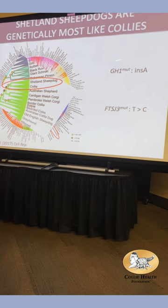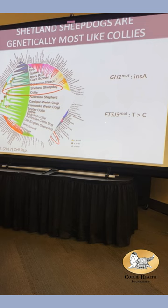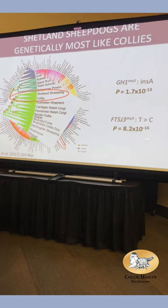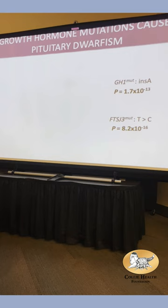One variant was an insertion and one was a base change. One is in a gene called growth hormone 1 — that's interesting. I went back and genotyped over 200 Shelties, and it was very highly associated — a p-value of something to the minus 16 — so very, very associated with lance canines.